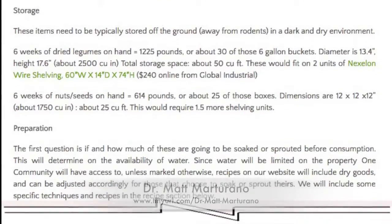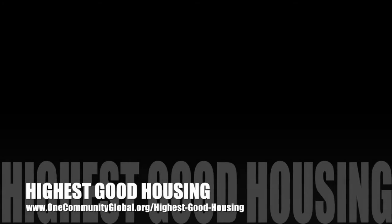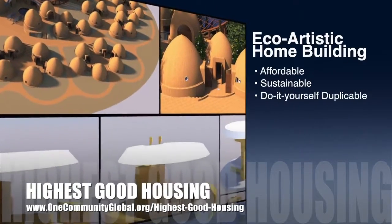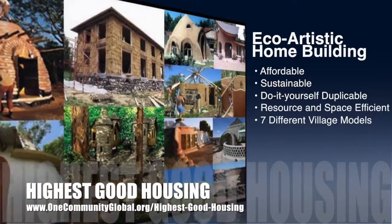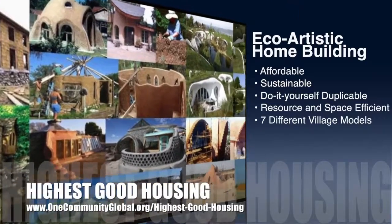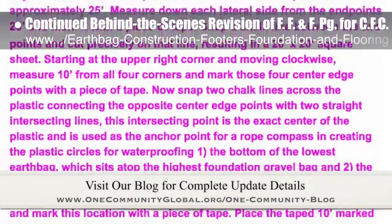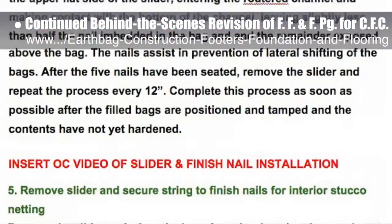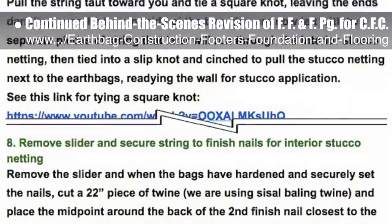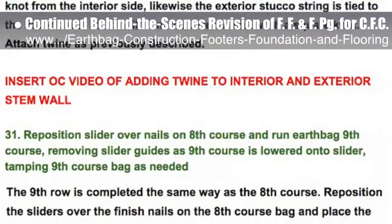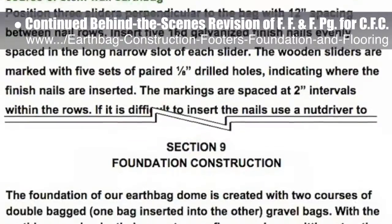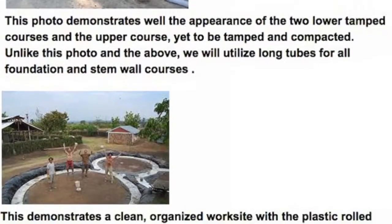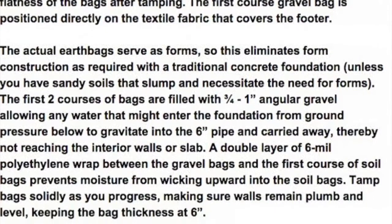One Community's approach to highest good housing is eco-artistic home building that is affordable, sustainable, do-it-yourself, duplicable, resource and space efficient, and consists of seven different sustainably constructed village models. This week the core team put another 10 hours into the revision of the footers, foundations, and flooring page for the crowdfunding campaign. We continued thorough review of section 10 — construction of stem wall and dome — and added several new steps to section 9 foundation construction. We are now 84% complete with this total update and rewrite.